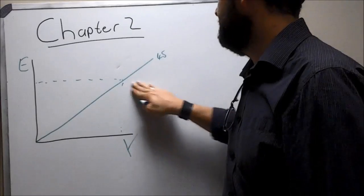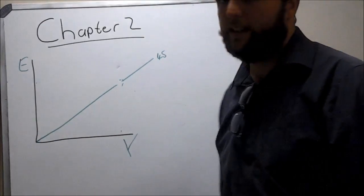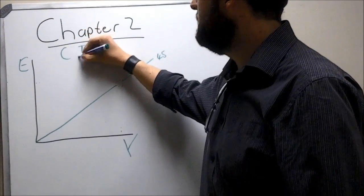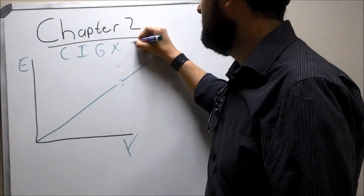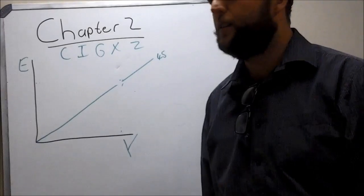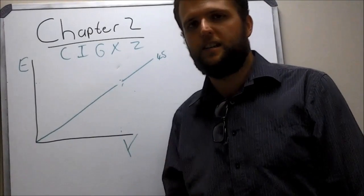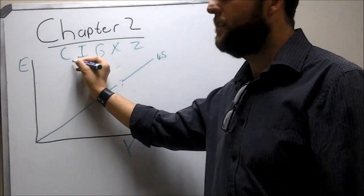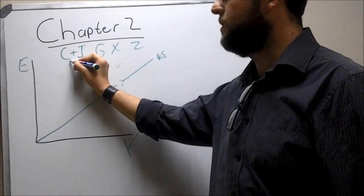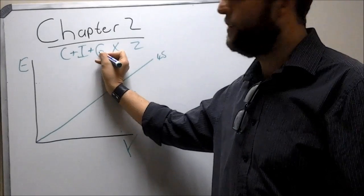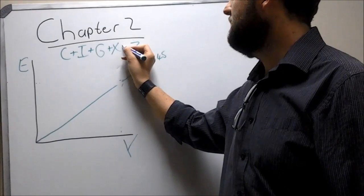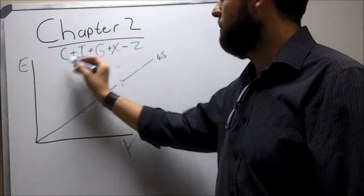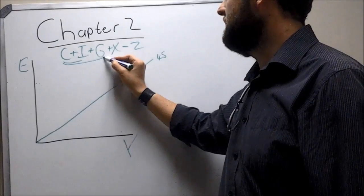In this chapter it's crucial to know about five variables: C, I, G, X, and Z. These five variables form the expenditure method to calculate GDP — the expenditure model. These are all sectors in the economy. C is one sector. C plus I is a two-sector model. C plus I plus G is a three-sector model. And C plus I plus G plus X minus Z is the full model.